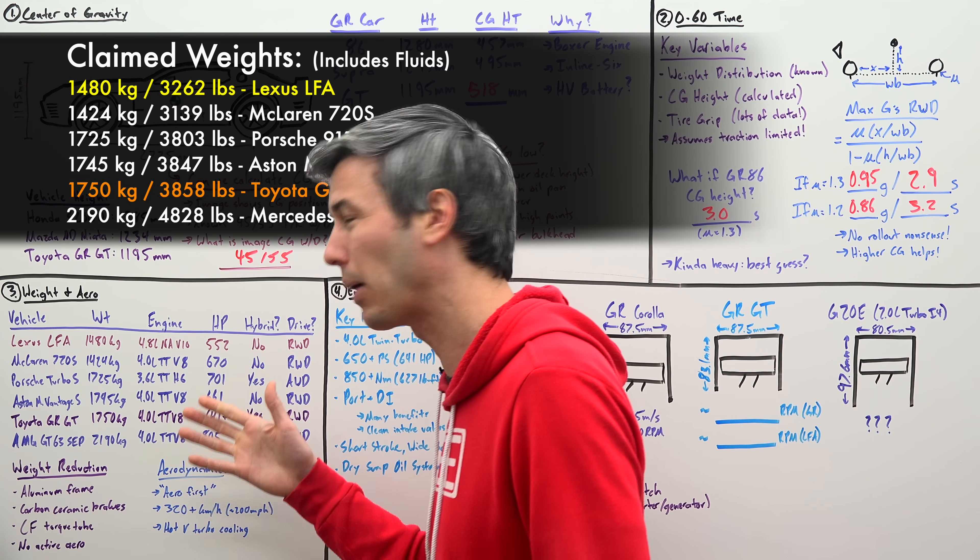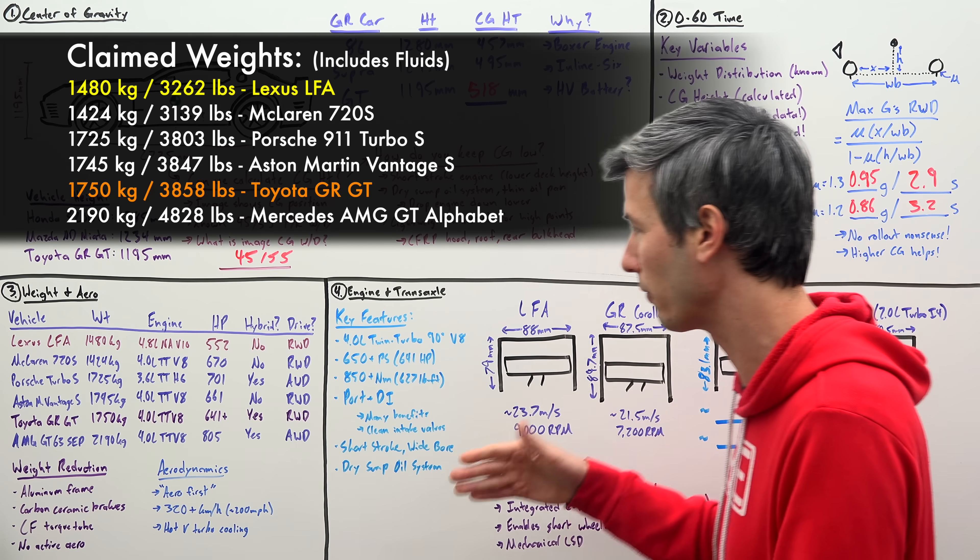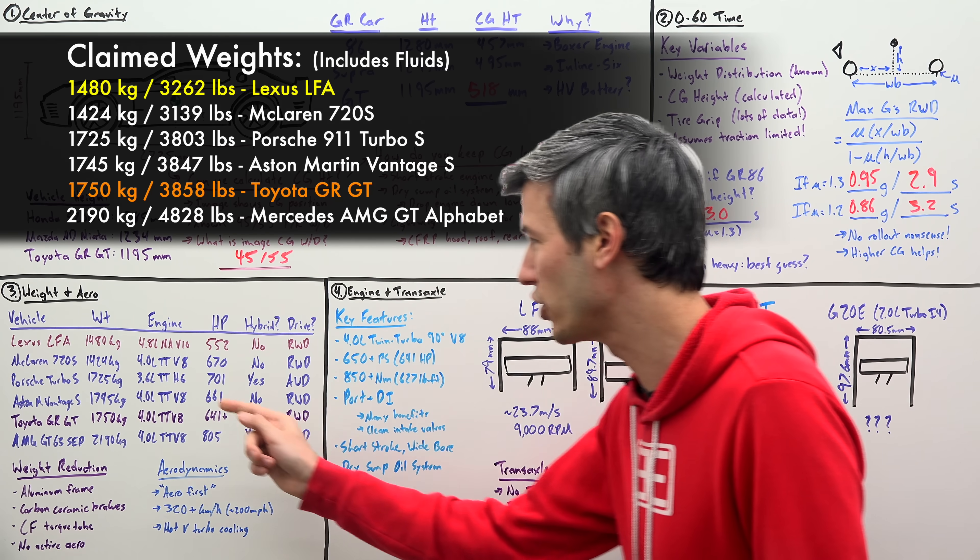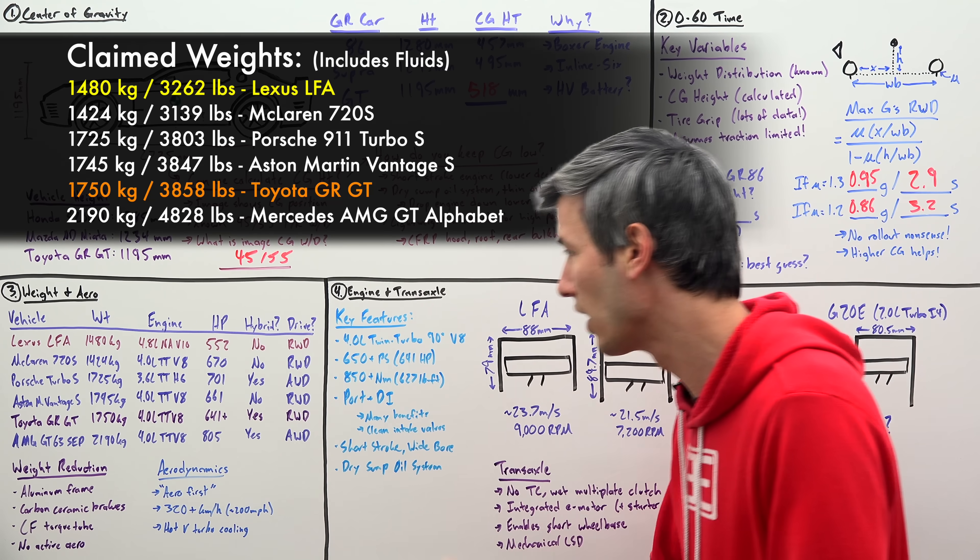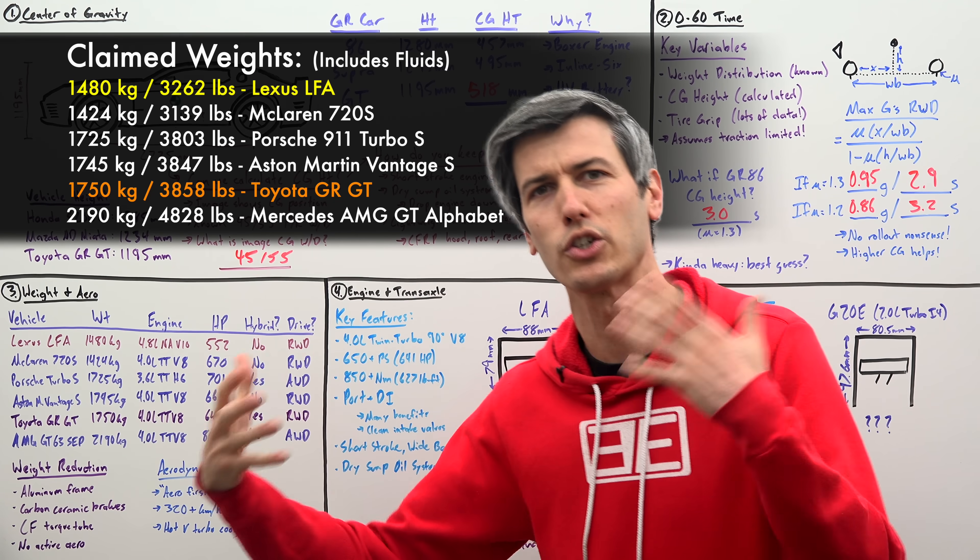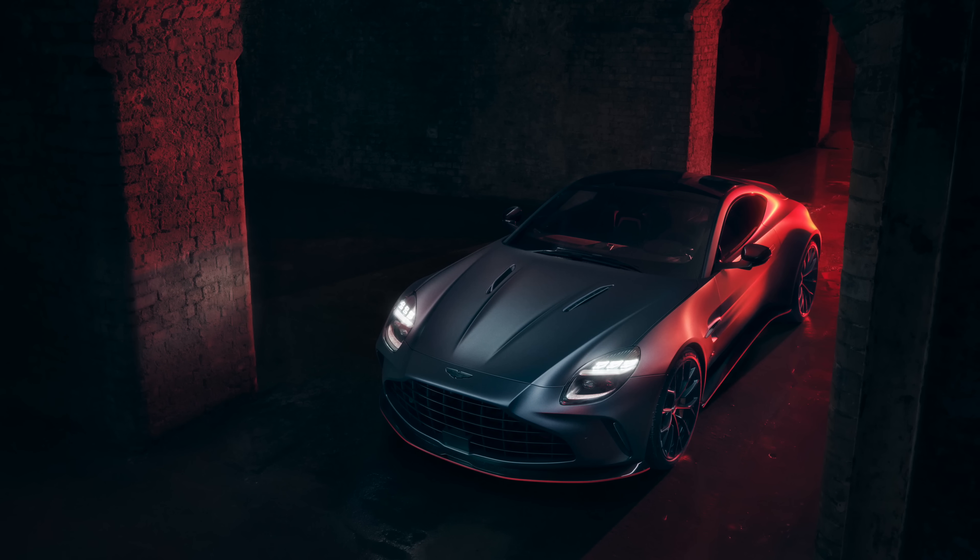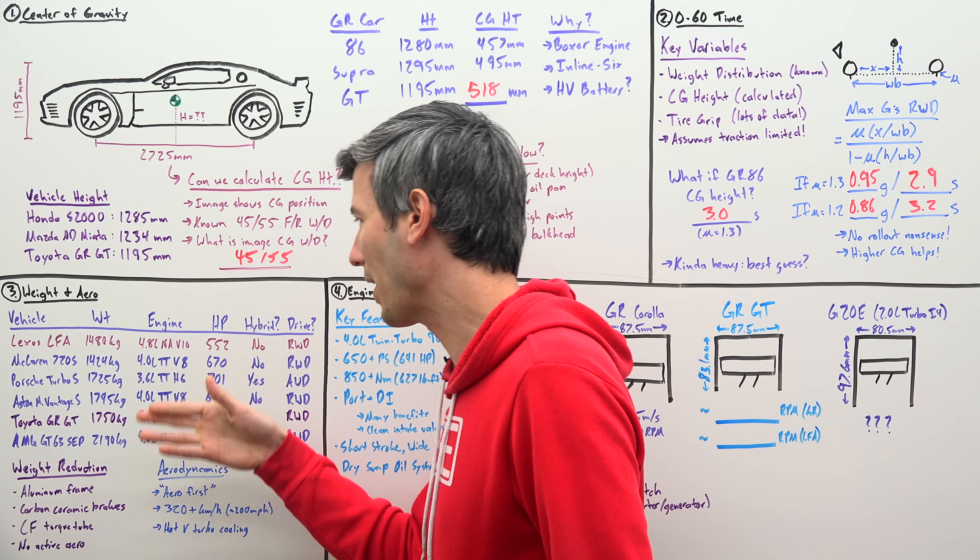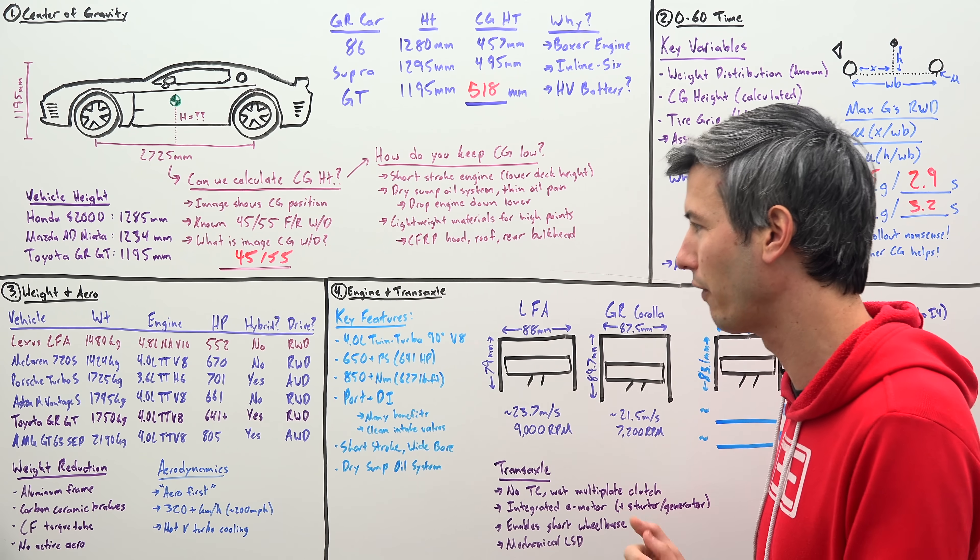Aston Martin Vantage S, probably the closest comparison we could get in terms of weight and performance, very similar in power, a little bit more power for the Vantage S, and just slightly lighter, using that same style 4 liter twin turbo V8, though it does not use a hybrid system, but you know, Aston Martin, right, it's got a luxury element to it, so that is always caring less about weight than, you know, cars that are going for all-out performance. So GR GT, weighing similarly to the Vantage S, I feel like is kind of showing, hey, this isn't that light of a vehicle.